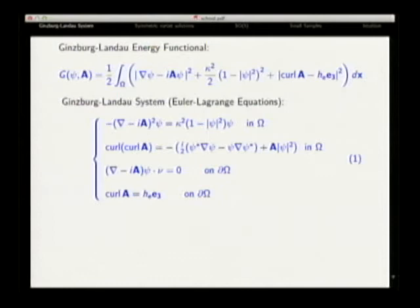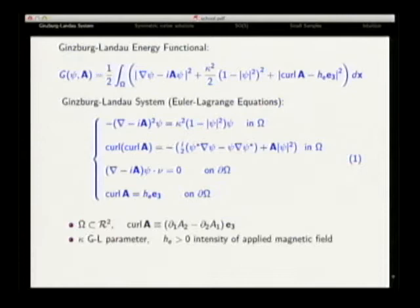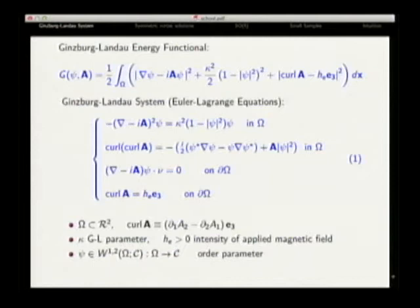We are looking at the Ginzburg-Landau energy functional. This is the complete Ginzburg-Landau. There is a magnetic potential, there is an applied magnetic field, and if you look at the state of the superconductor, they are minimizers of this energy functional. If you look at the Euler-Lagrange equation of this, you find this system. Here we are working in two dimensions.